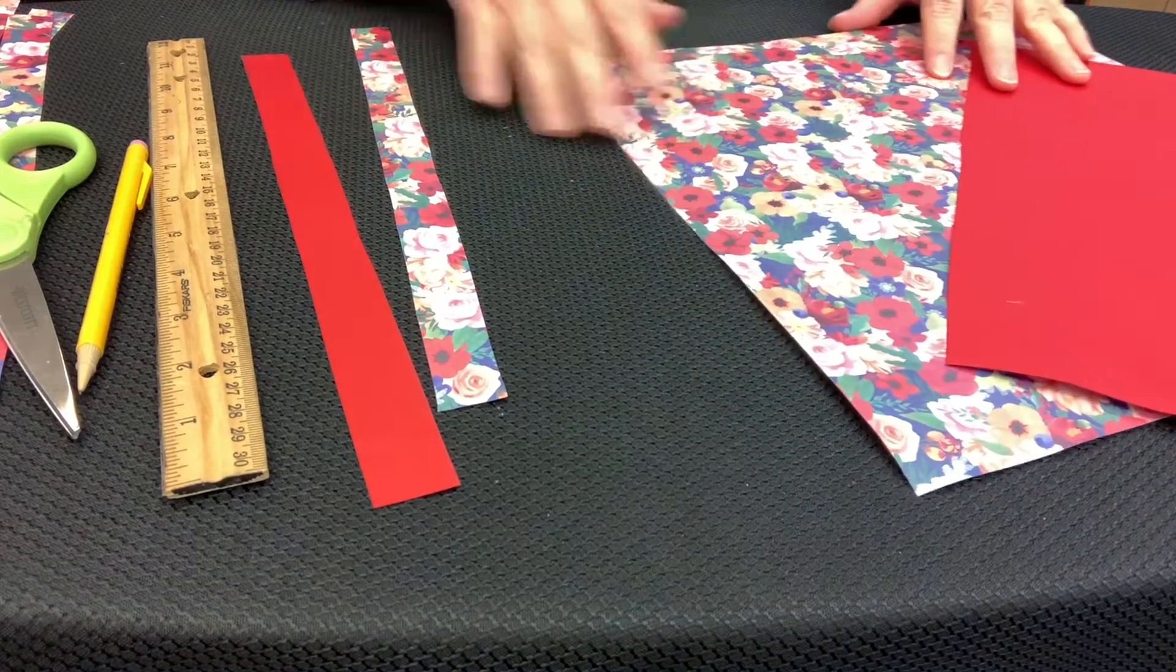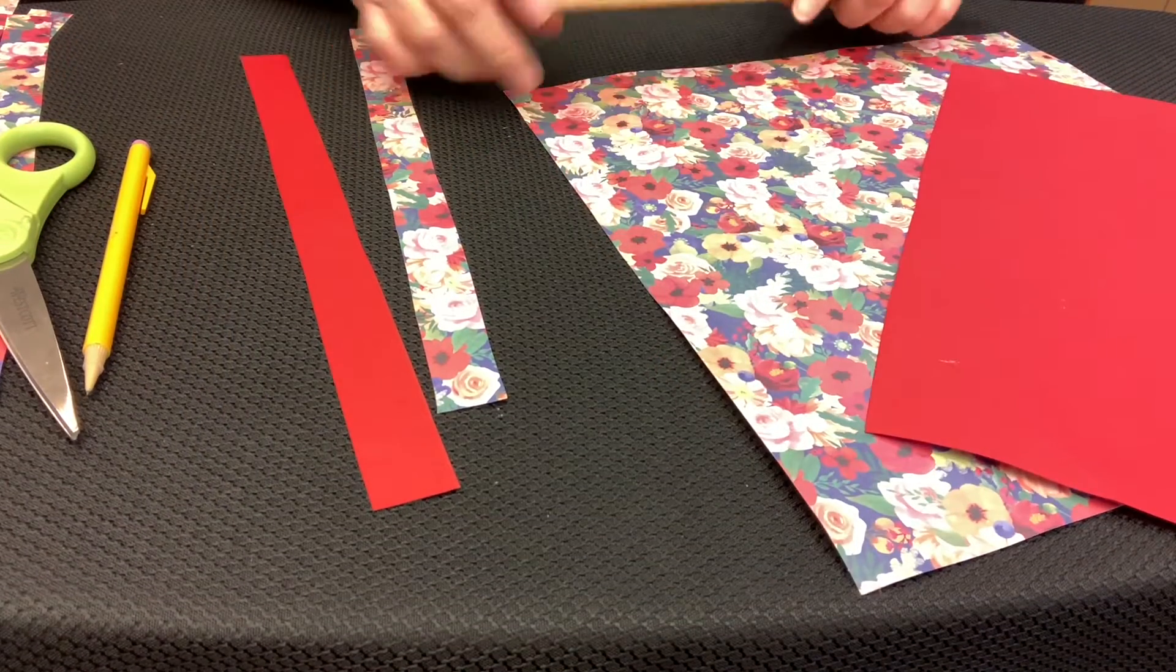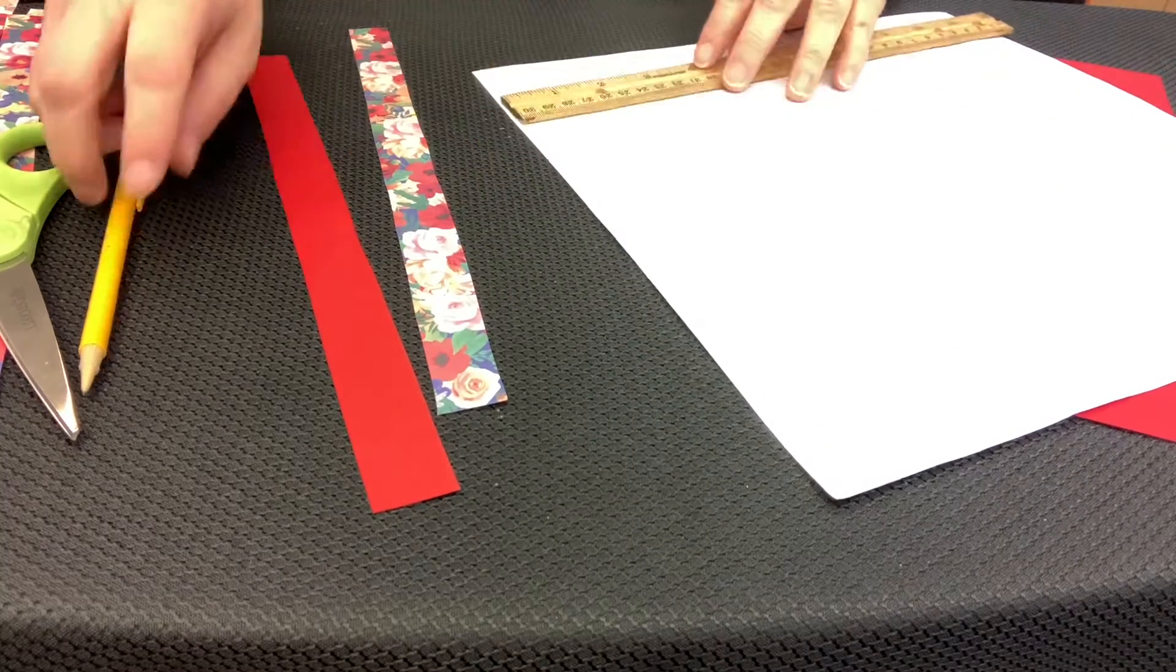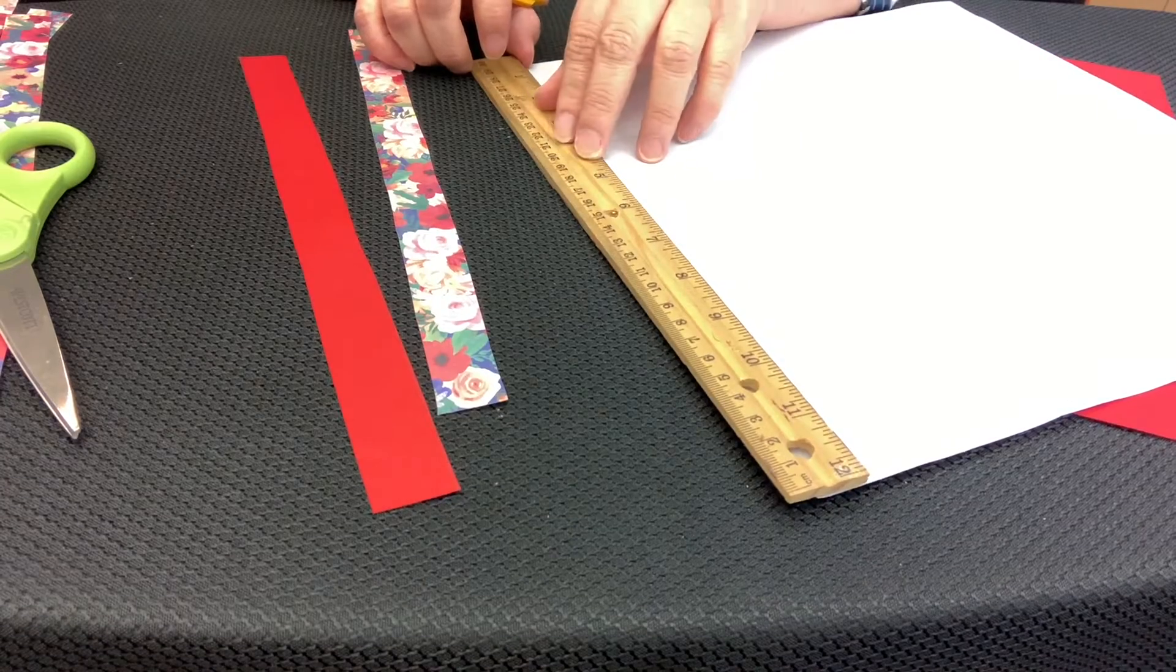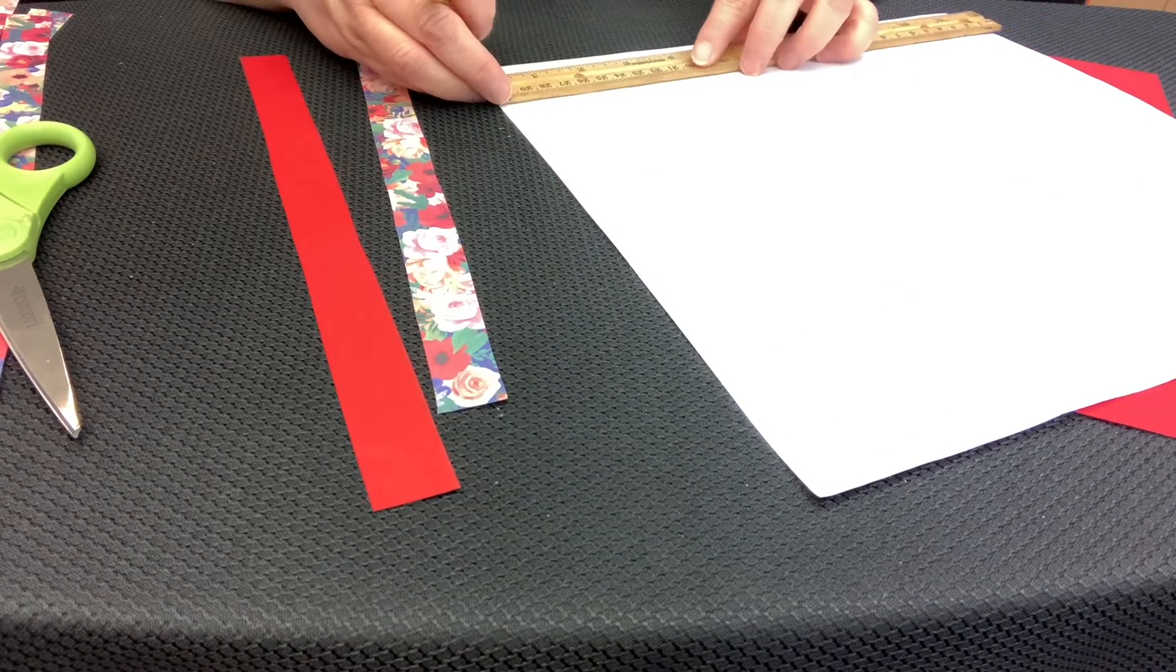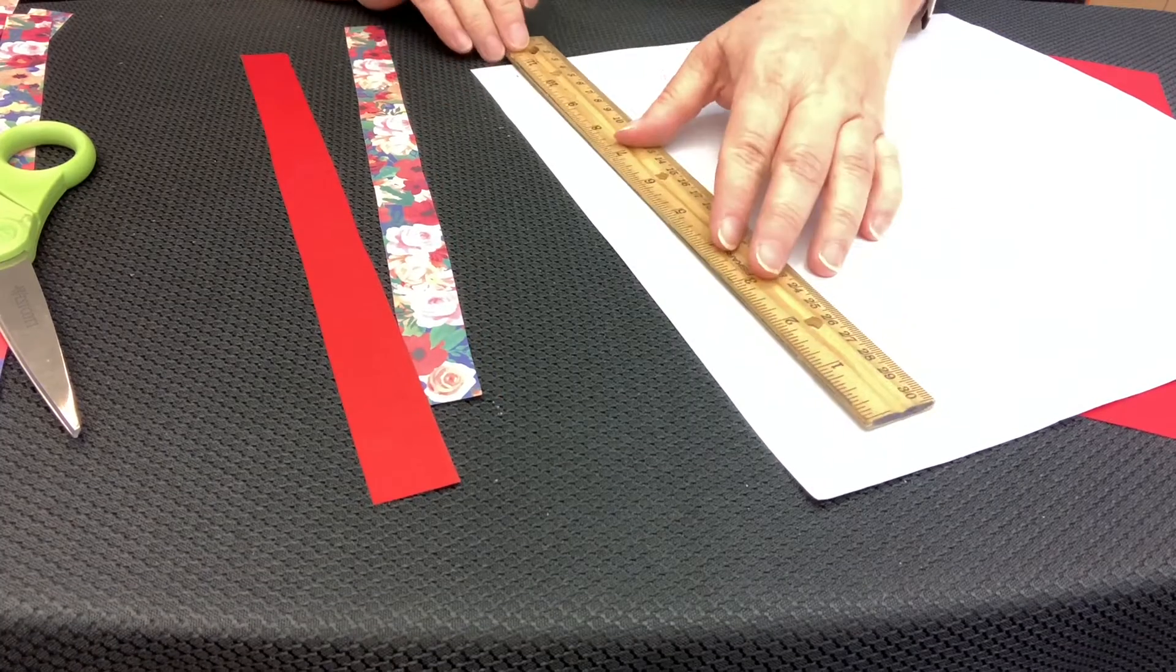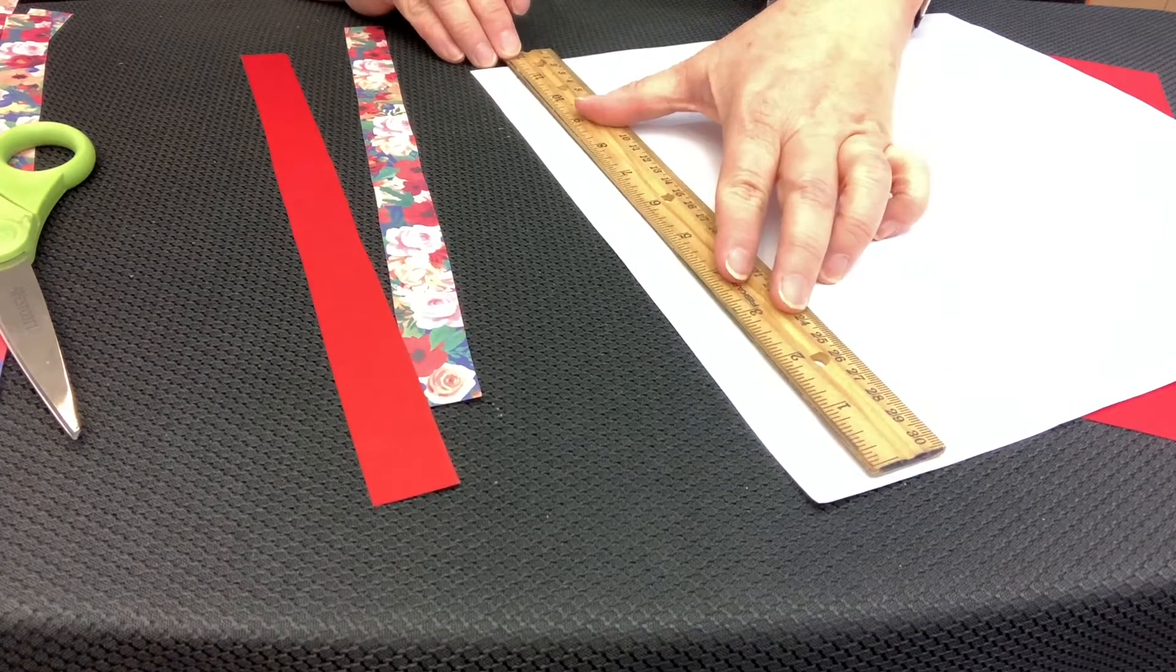Now we're going to cut the paper into strips. The strips need to be cut 12 inches long, and since the scrapbook paper is normally 12 by 12, it'll automatically be 12 inches, and three-quarters of an inch wide.